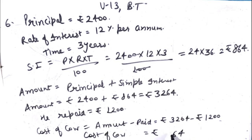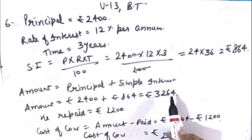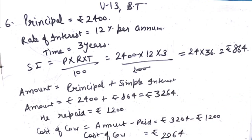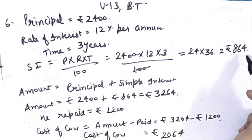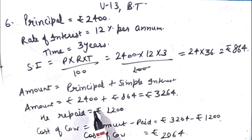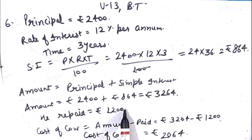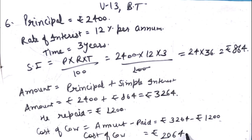So the farmer paid Rs.1,200 in cash, and the remaining Rs.2,064 was the value of the cow, making the total Rs.3,264. Let's recap: principal, rate of interest, and time were given. Find the cow's cost by first finding simple interest — Rs.864. Then amount equals principal plus simple interest: 2,400 plus 864 equals Rs.3,264. Farmer paid Rs.1,200, so cost of cow is 3,264 minus 1,200 equals Rs.2,064.